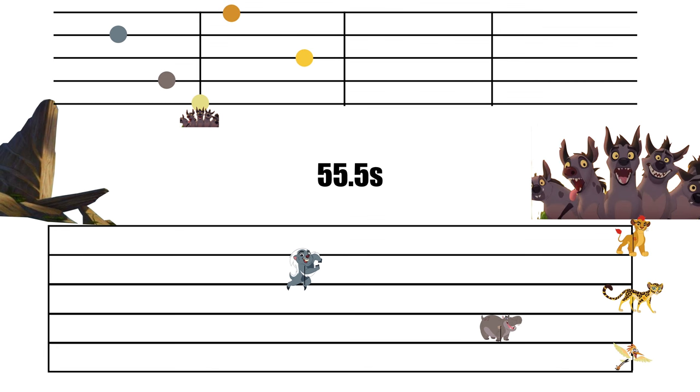At 55.5 seconds Ono has travelled the kilometer. Beshti the hippo is nearly there. Egrets can travel at a top speed of 65 kilometers per hour. Fuley has nearly travelled 2 kilometers but Bunga is less than halfway there.